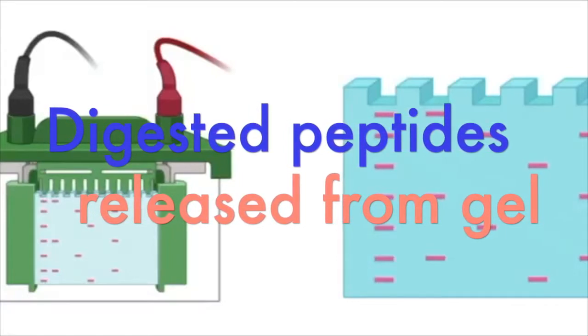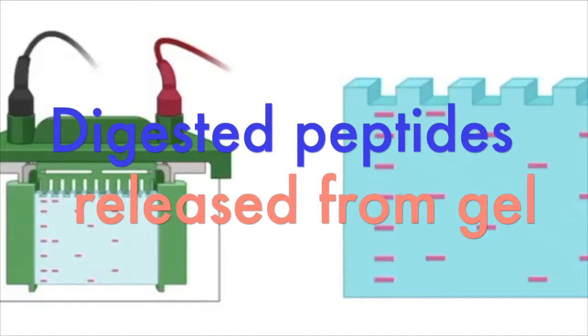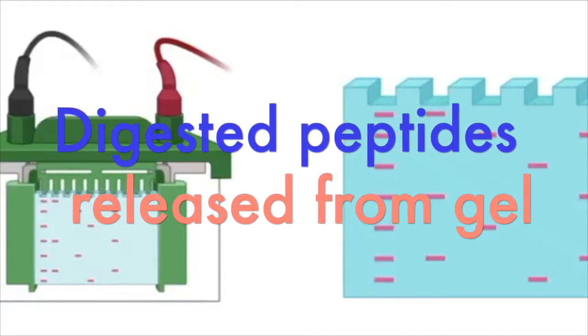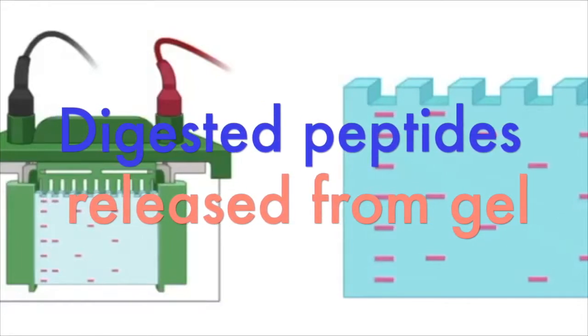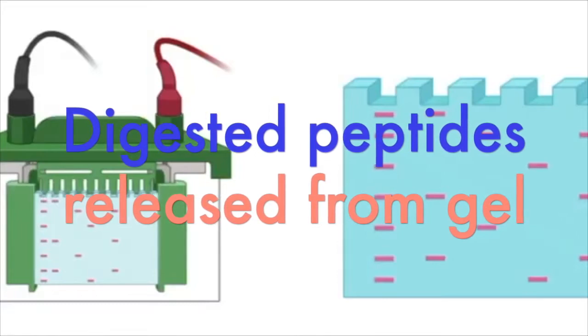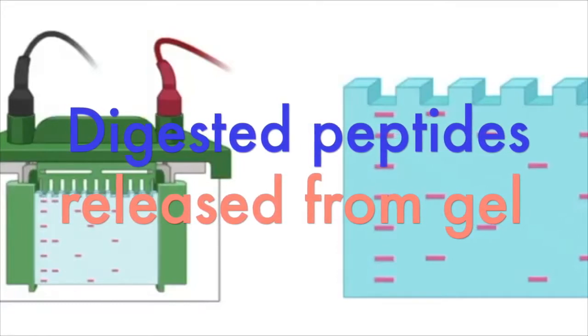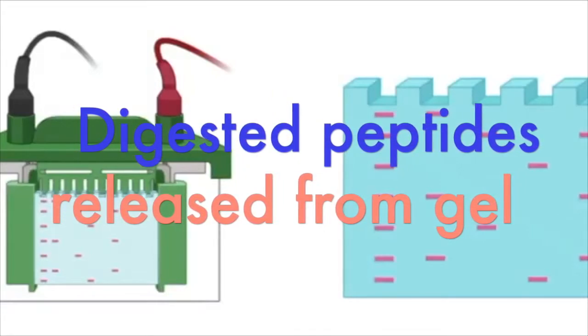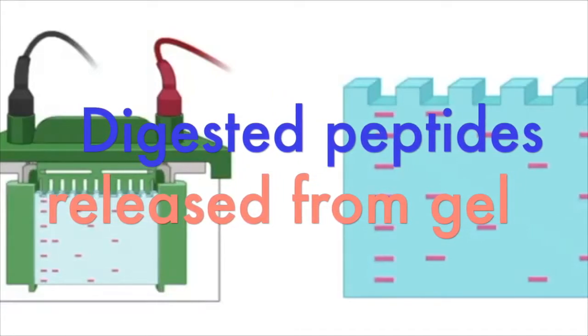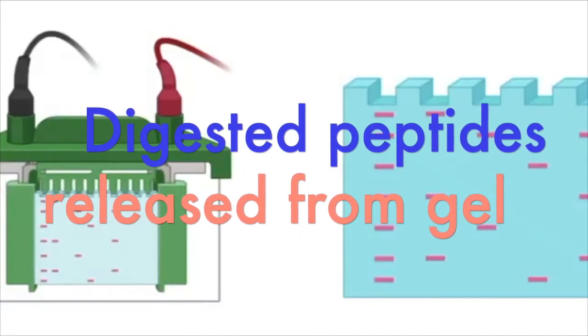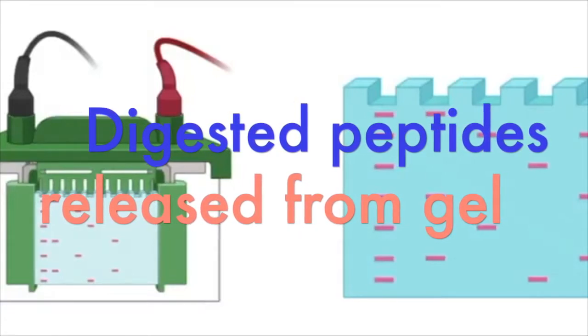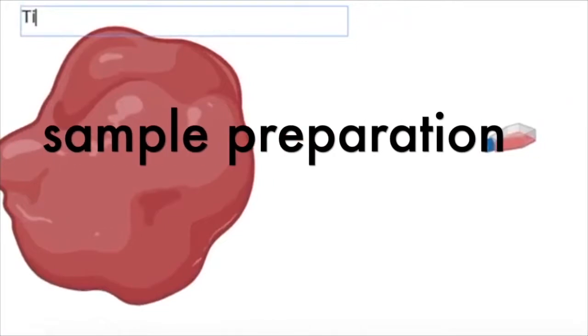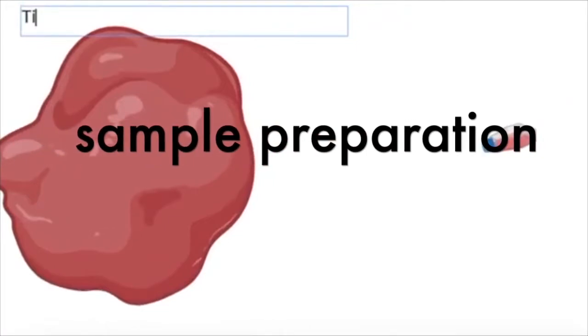It's only when you trypsinize that the peptides are now small enough to release from the gel. This allows you to wash out contaminants, your sodium dodecyl sulfate that you use to solubilize the protein and run through the gel, and allows you to wash out salts used in processing. It's only at the peptide stage that you now release your peptides for going ahead to acidify for mass spectrometric analysis.